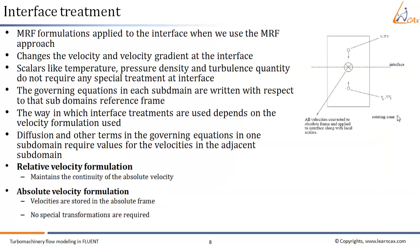Let us now discuss the interface treatment in detail. There are MRF formulations applied to the interface when using the MRF approach. The formulation applied will depend on the velocity formulation being used. Also, the MRF approach only changes the velocity and velocity gradients at the interface. In the MRF approach the calculation domain is divided into two subdomains, each of which may be rotating or stationary with respect to the absolute inertial (laboratory) frame. The governing equations in each subdomain are written with respect to that subdomain's reference frame.